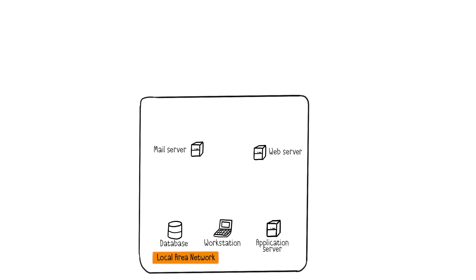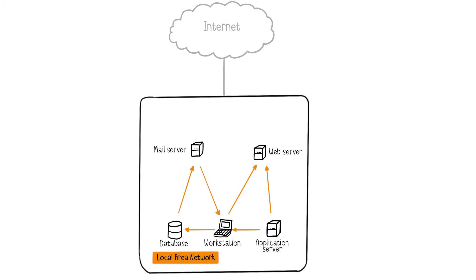The network allows machines such as servers, workstations, or storage infrastructure to communicate with each other and to exchange data. This can be between them in a local network, but also with the outside world, particularly the internet.